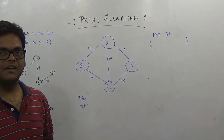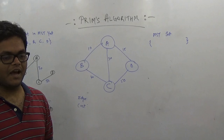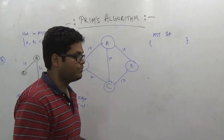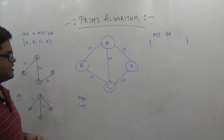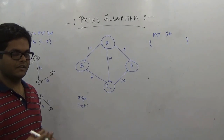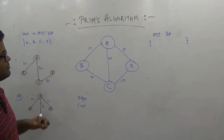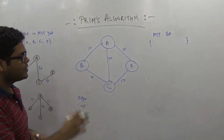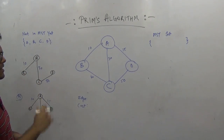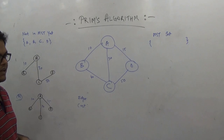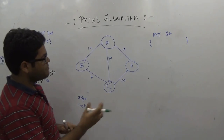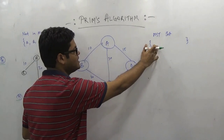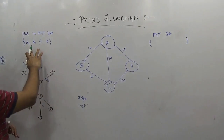However, this brute-force method in the worst case has a time complexity worse than exponential. Prim's algorithm does actually better than that. Prim's algorithm maintains an MST set where it keeps track of the vertices included in our minimum spanning tree. At every step, it picks the minimum cost edge that connects the vertices in the MST set with the vertices not yet included in the MST set.